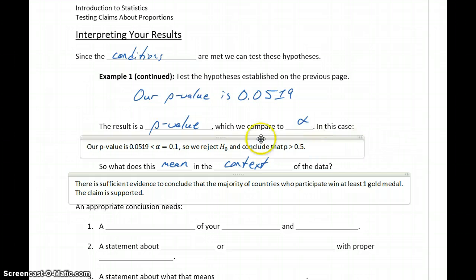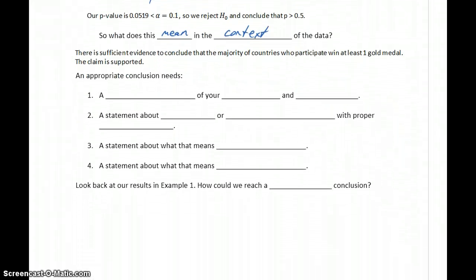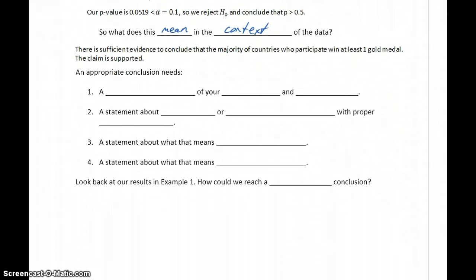So since there is sufficient evidence to reject the null hypothesis and conclude that the proportion is greater than 50%, there's sufficient evidence to conclude the majority of countries who participate will win at least one gold medal. So we've taken this in stages, setting up the problem, generating our results, and then looking at what we want to state in our conclusion.